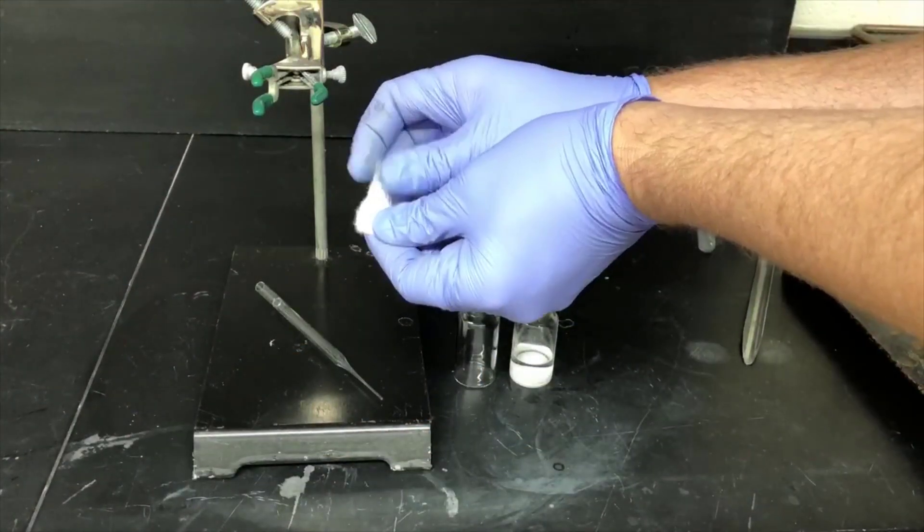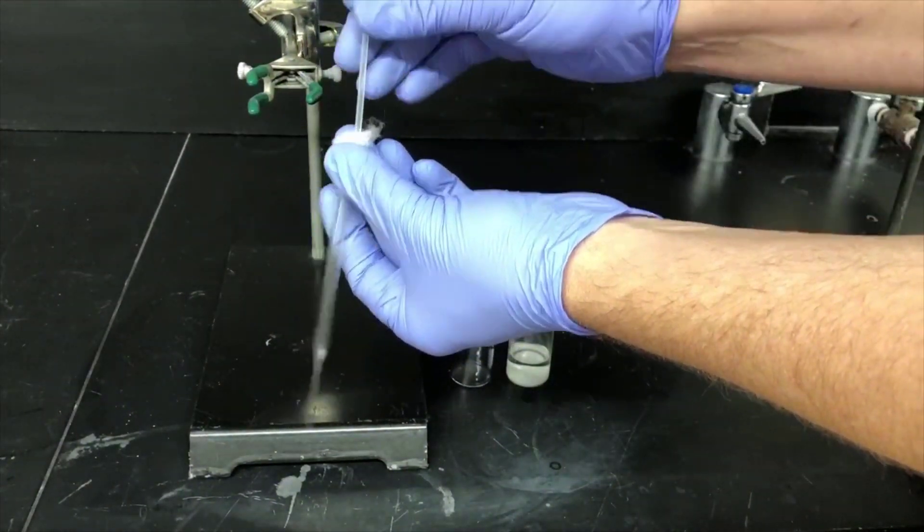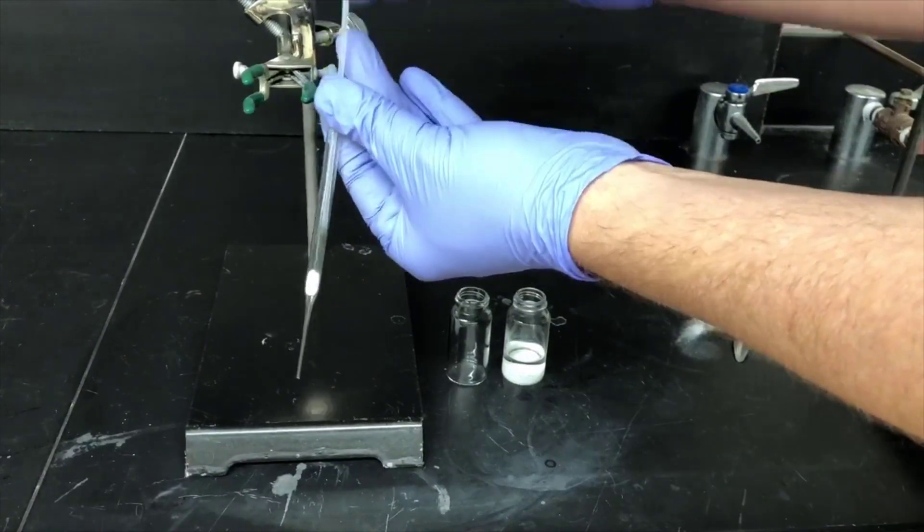Now we're going to filter our solution into that vial we just weighed. Here I'm getting a little tuft of cotton, and I'm going to put it into a disposable pipette, packing it lightly into the tip.